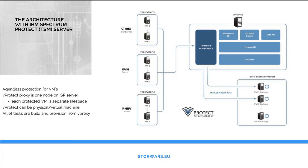In this scenario we have the IBM Spectrum Protect server as the main backup engine that takes all of the data from the vProtect temporary staging area storage space. From the configuration point of view, on IBM Spectrum Protect we need to create one node which will represent the vProtect proxy server. This proxy server node will store all of the different virtual machine backups as separate file spaces on the IBM Spectrum Protect server.